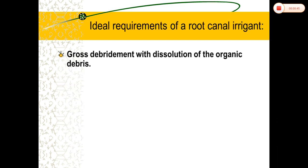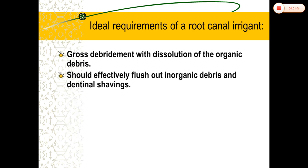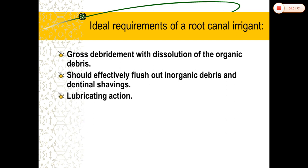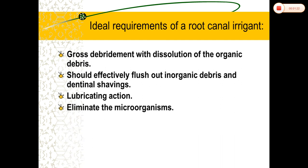Moving to the ideal requirements of a root canal irrigant: it must aid in debridement with dissolution of organic debris present in the root canal. It should effectively flush out inorganic debris and dentinal shavings, so it must have adequate flow. It should flow into the root canal to remove debris and dentinal shavings, and it should have lubricating action.